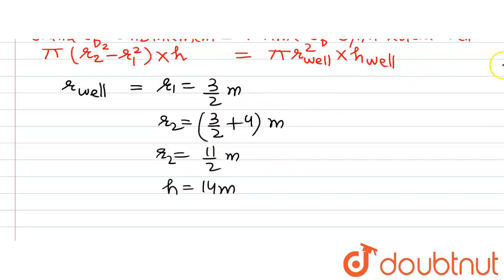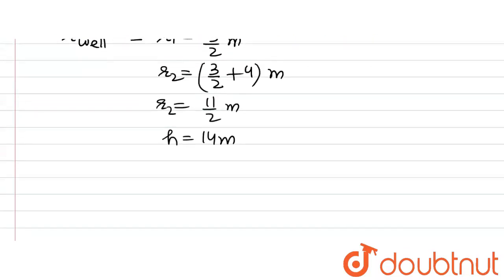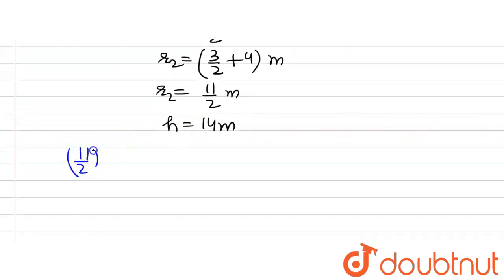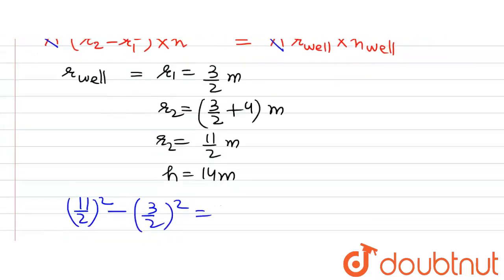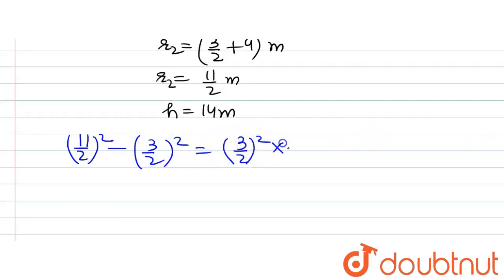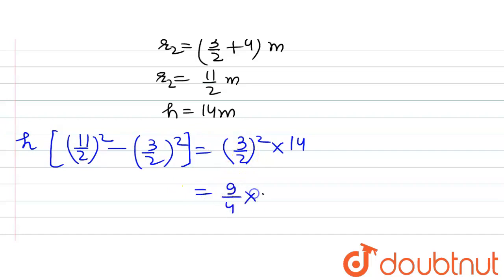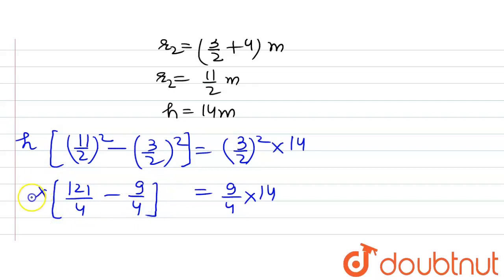Putting these values into the equation: pi cancels on both sides, leaving R2 squared minus R1 squared times H equals R1 squared times height of well. So (11/2) squared minus (3/2) squared, multiplied by H, equals (3/2) squared multiplied by 14. This gives 121/4 minus 9/4, multiplied by H, equals 9/4 times 14.